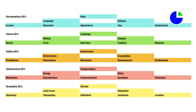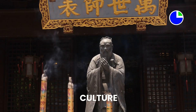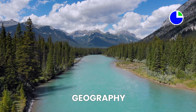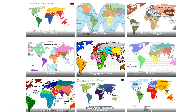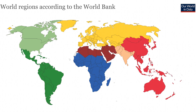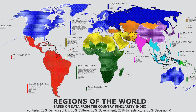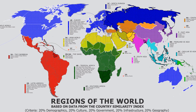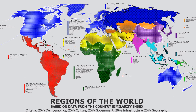It defines regions by considering a multitude of different factors, including demographics, culture, politics, infrastructure and geography. Unlike most regional maps created in the past, which have been produced by geographers based on their own finite knowledge and prejudices, the Country Similarity Index is a more rigorous statistically-based approach to this extremely complicated task.